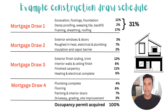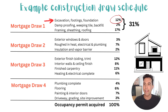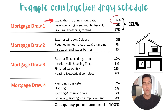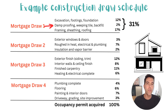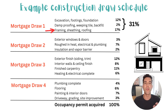The lender will ascribe a certain percentage of completion of the home at each stage. Under mortgage draw one, 12% of the total financing budget is assigned to excavation, footings, and foundations — that amount won't be made available until that work is complete. Damp proofing, weeping tile, and backfill represent another 2%, and framing, sheathing, and roofing is another 17%. So mortgage draw one in this example totals 31% of the total mortgage financing approved.